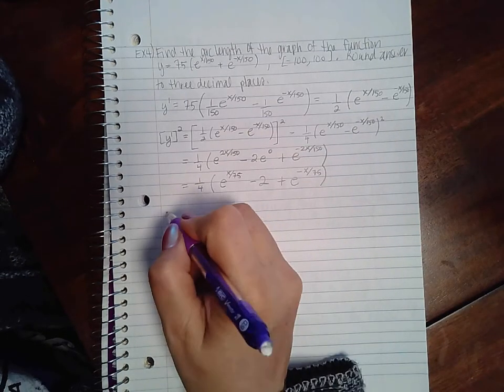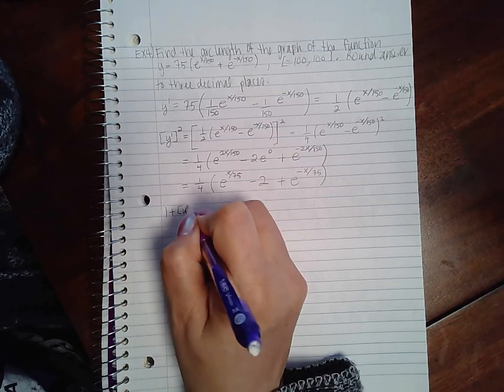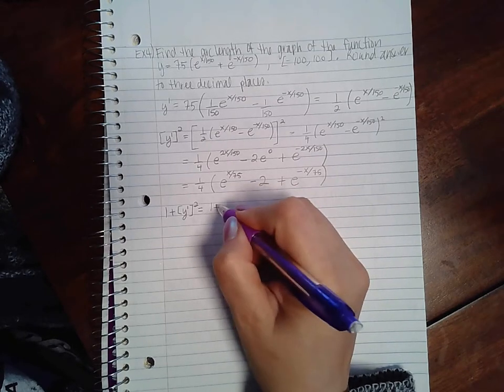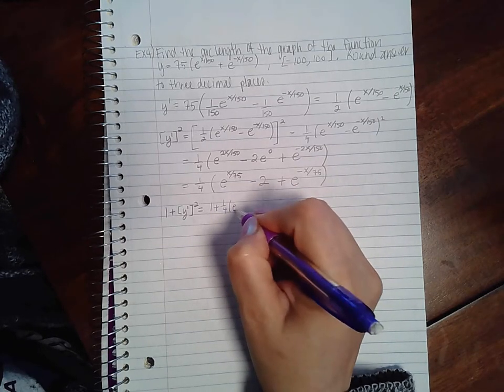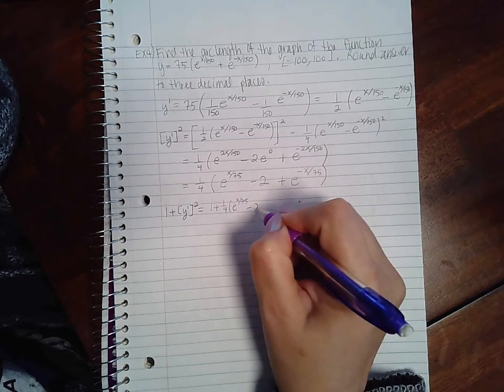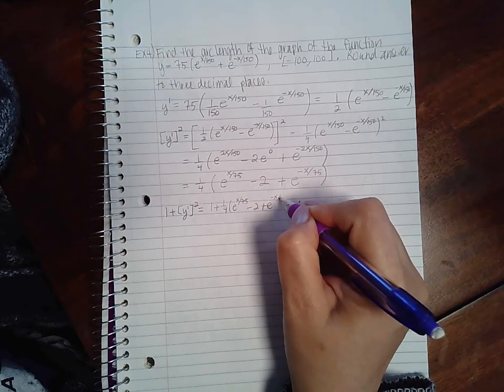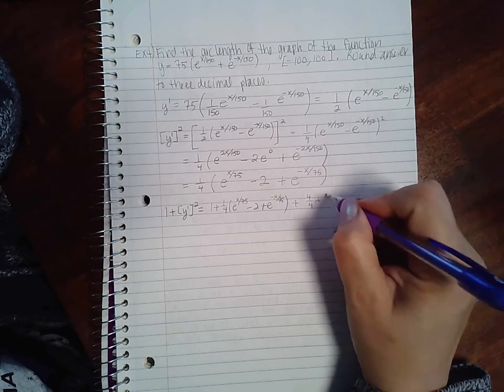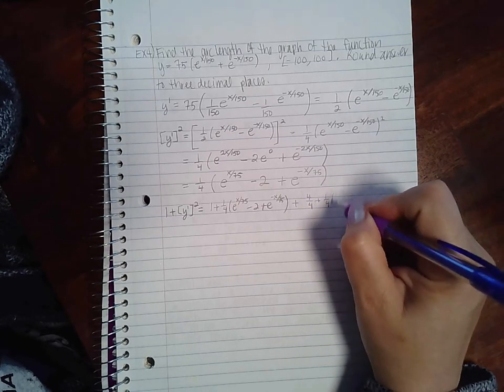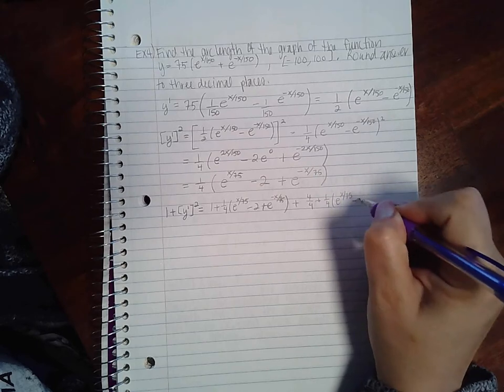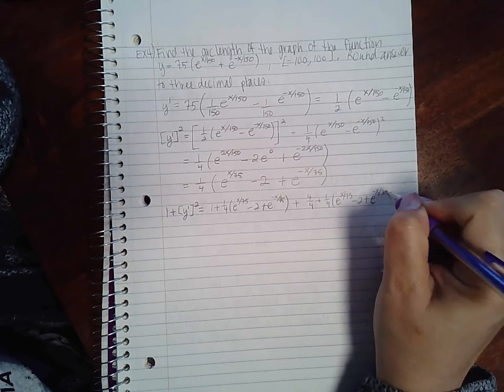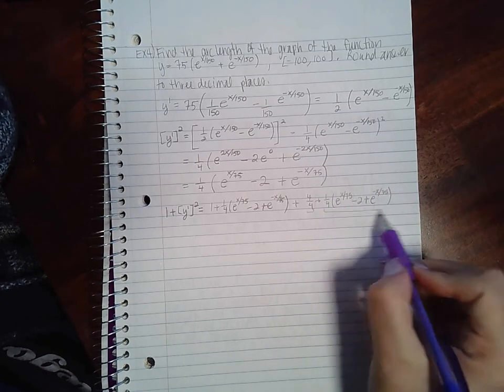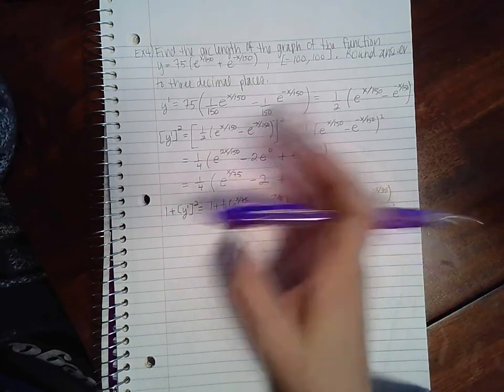Okay now I need to add 1 to this expression. So if I add 1, it's the same as adding 4 over 4. And that is the same as if I were to take this term and this term and factor out the 1 fourth.